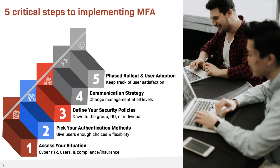Second step: pick your methods. Giving your users enough choices is key. It's one thing to enforce that they use two factors to log in; it's another to give them five approved authentication methods to pick from — so if their phone isn't available or they don't have access to email, they can still move forward with no impact on productivity, versus being locked out and calling the help desk.